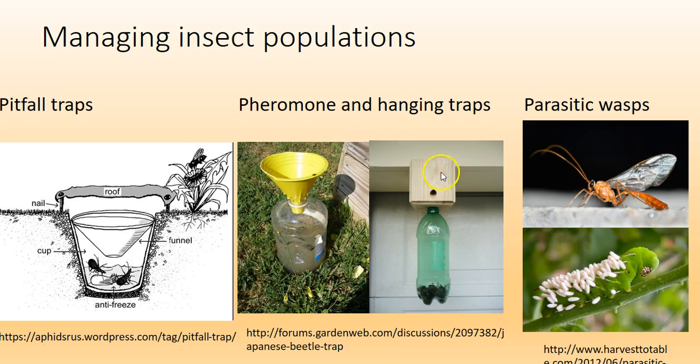There's also a carpenter bee trap — carpenter bees burrow into wood and don't serve a great ecological function. We've also talked about biological control. The ichneumon wasp is parasitic — they were released onto tobacco hornworms so that the hornworms got infected.